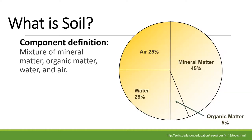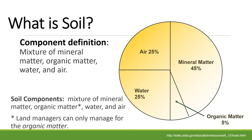Another way to look at it is the component definition of soil: it's air, mineral material, some organic matter, and some water. Remember that the only thing we can really control there is organic matter. We have the ability to add water, but other than that, our job is all about managing organic matter — and even though it's a very small portion of the soil, it's very important.